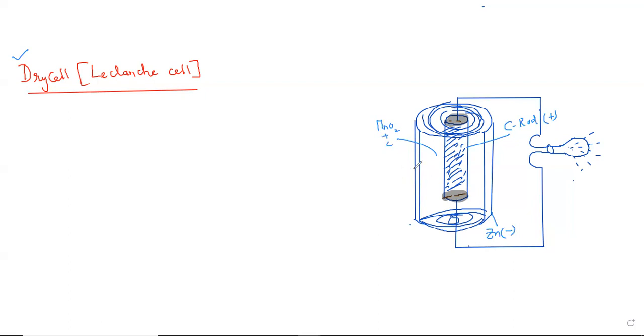Whereas, the space between the electrodes is filled by moist ammonium chloride. The space is filled with moist ammonium chloride, NH4Cl. And this is actually its construction part.